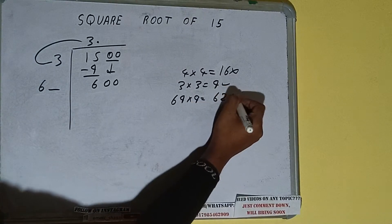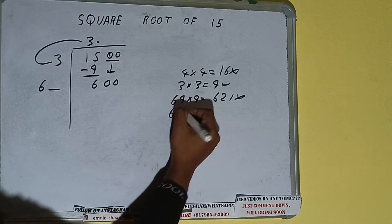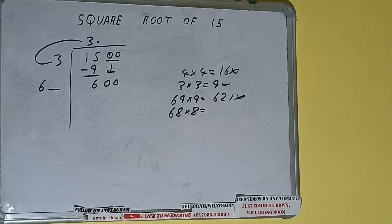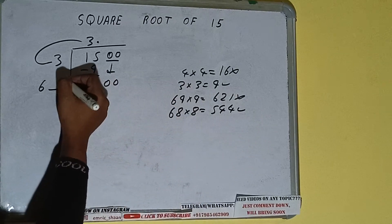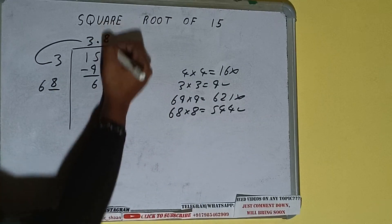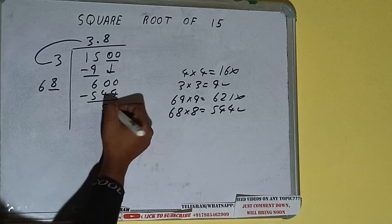It will be 621, which is slightly bigger than 600, so we cannot take it. Let's try 8 times, 68 into 8. Let's try. It will be 544, which is good to take.